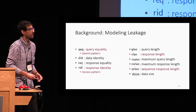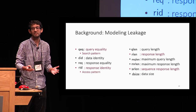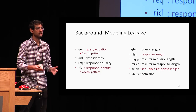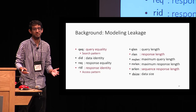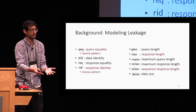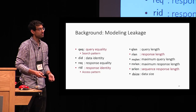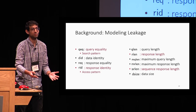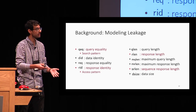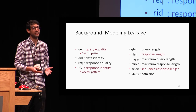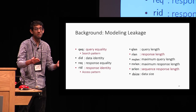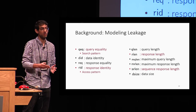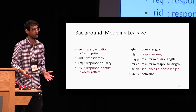First, query equality — known as the search pattern in the literature — is the leakage that reveals if and when a query is repeated. The response identity, known as the access pattern, consists of the responses to a specific query. The response length is simply the length of a response, while the sequence response length is the sum of response lengths over a sequence of queries.